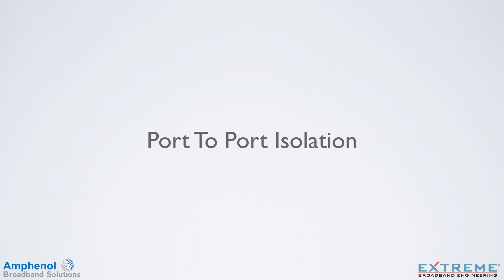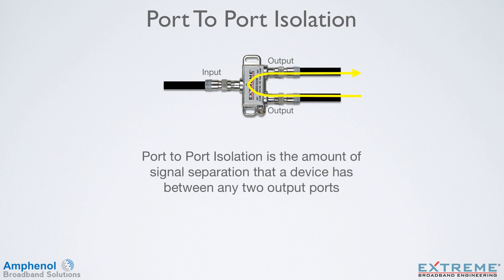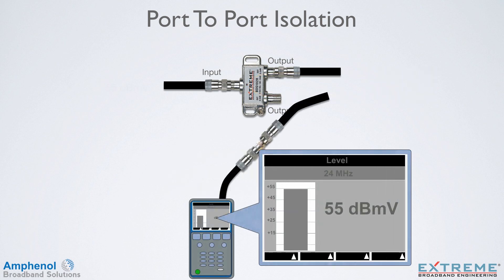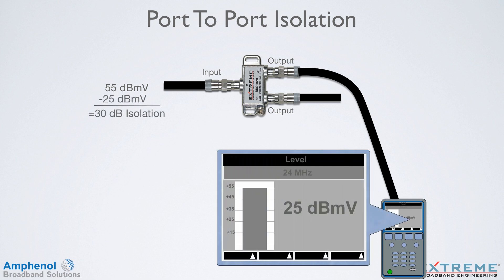Next, we'll look at port-to-port isolation. Port-to-port isolation is the amount of signal separation that a device has between any two output ports. This helps to prevent interference to other services from high-level return signals. Here, we're measuring a return signal of 55 dBmV at 24 MHz coming into one of the output ports. Next, we'll measure the amount of signal that's present on the other output port. In this example, we're measuring 25 dBmV, so the port-to-port isolation is 30 dB.